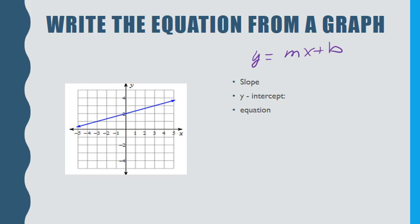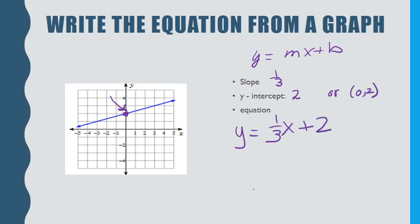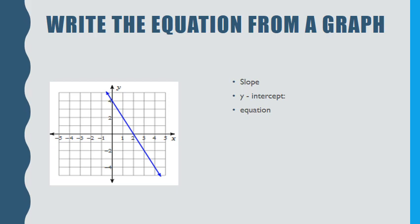Slope is rise over run. In this case we go positive three and positive one, so our slope is one-third. The y-intercept is where the line crosses the y-axis — right here at 2, or as an ordered pair (0, 2). Now substitute directly into y equals mx plus b: y equals one-third x plus 2. That's slope-intercept form from a graph.